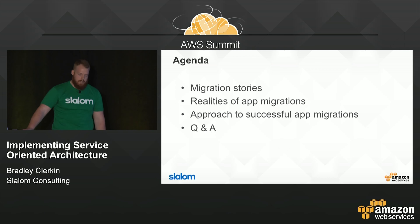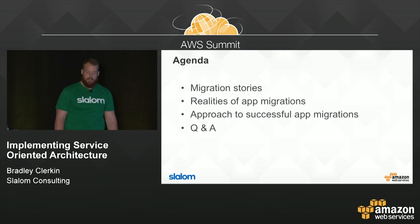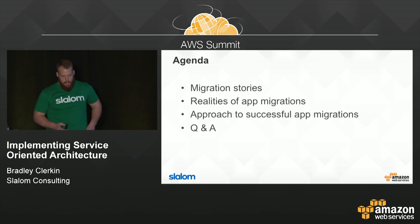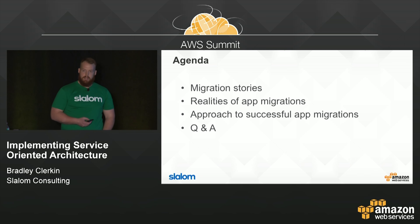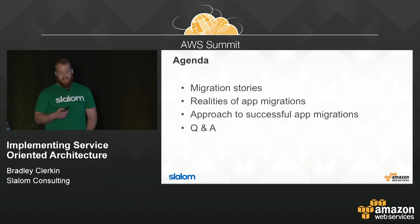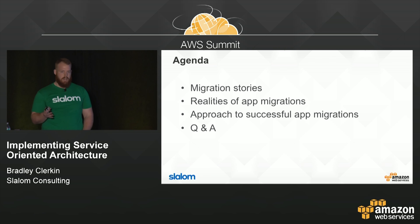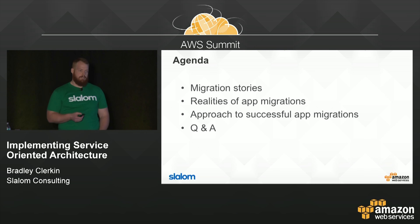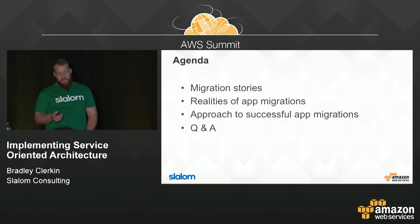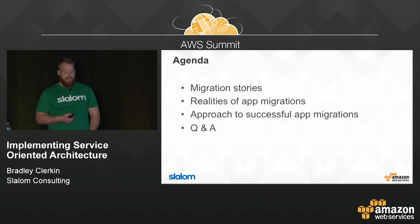The agenda: I've broken the presentation into three different sections, and hopefully we'll have some Q&A at the end. The first section, I'm going to share two migration stories that I was the program manager on, so I have in-depth knowledge of the projects. We'll then share some commonalities between the two stories and dive into the realities of app migrations — a collection across all of our 110 different projects with AWS and the enterprise.